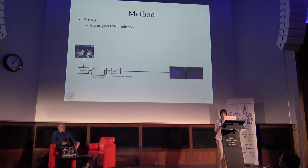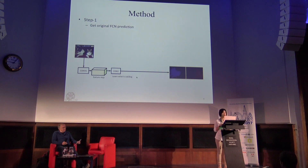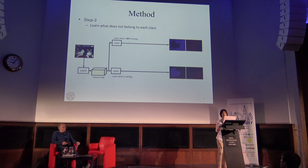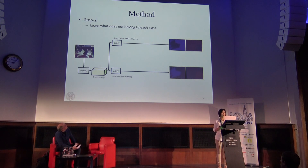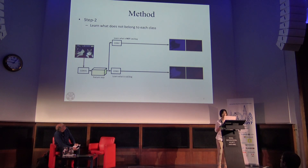Here are the details of our method. First, we have the original branch, which is a fully convolutional neural network using ResNet-101 as the base architecture — this branch is trained normally. Secondly, we add another branch, which we call the reverse branch. This branch has the same network architecture as the original branch, but during training we focus on the pixels that are not labeled as cat or dog.